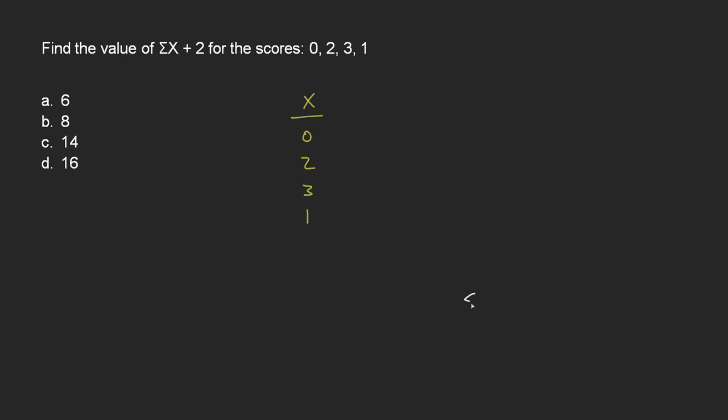So we're looking at the sum of X plus 2. Order of operations: brackets first, then exponents, then division, then multiplication, addition, and subtraction. We don't have any brackets, exponents, division, or multiplication.